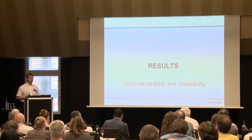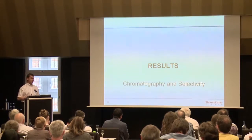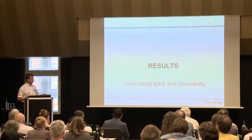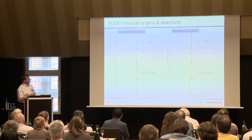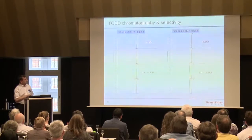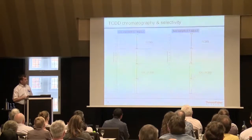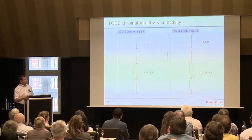Dioxin analysis starts with good chromatography, and selectivity should be achieved. Let's have a look at how chromatography looks for a CS1 standard on the left-hand side at 0.1 pg per microliter — this is TCDD, quantitation ion, confirmation ion, with the corresponding labeled internal standard — and the feed sample which was spiked at similar levels.